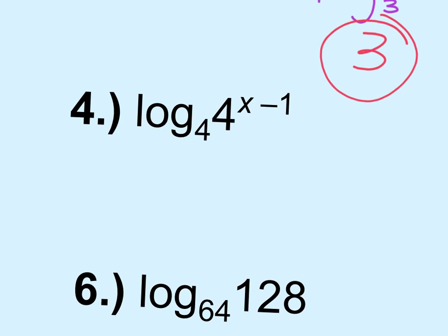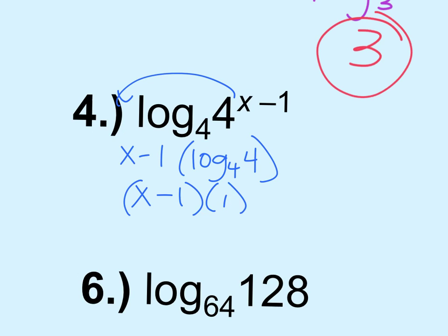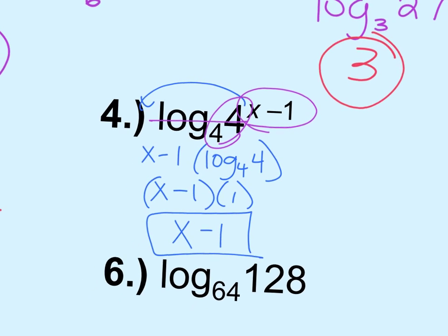Okay, number 4. So two ways to look at this. One is bring that to the front like we just did. So this becomes x minus 1 times log base 4 of 4. And log base 4 of 4 is what? 1. So x minus 1 times 1 is just x minus 1.